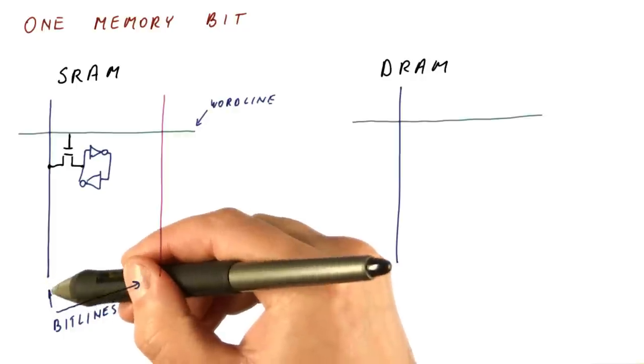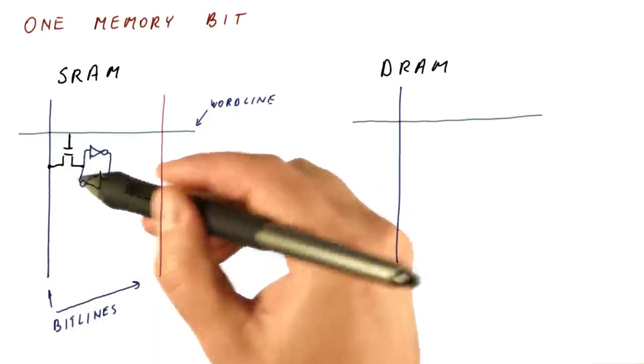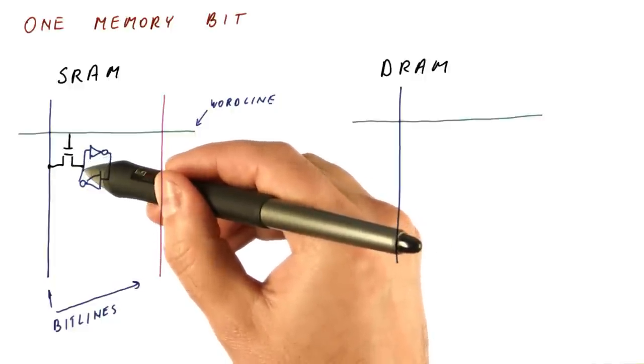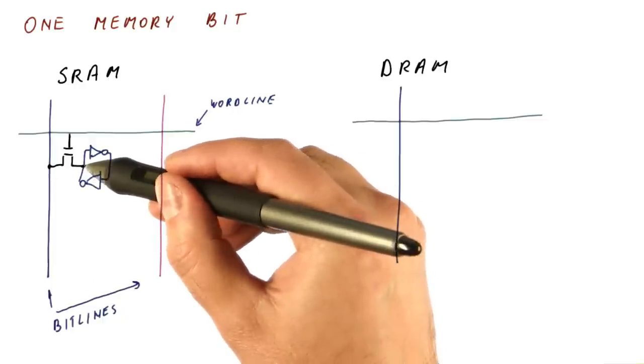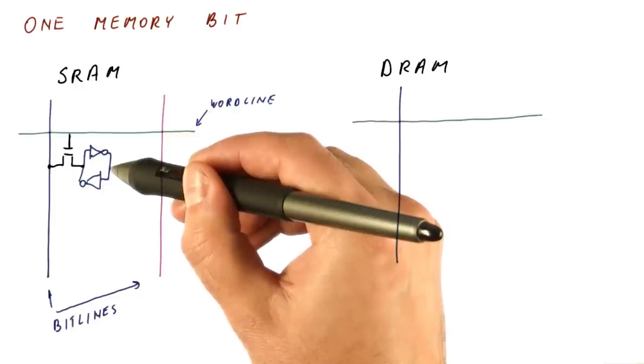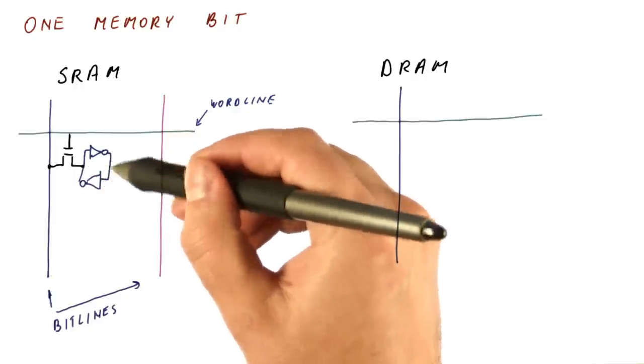If we put a stronger one here, because these are small inverters, we can defeat them so that even though this inverter is trying to put a zero here, we defeat it with a one. And then what happens is, now that this is a one, this inverter outputs a zero here. This inverter now starts outputting a one, and the cell becomes a one.